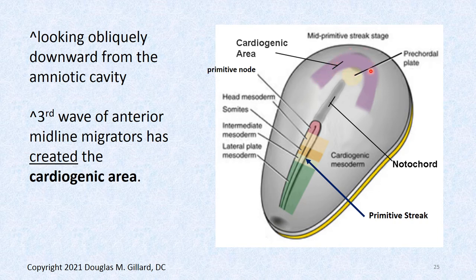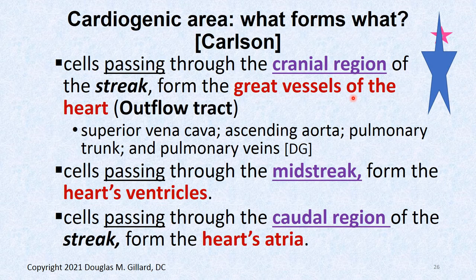The cardiogenic mesoderm morphs into the cardiogenic area and gives rise to the heart and the great vessels that come off the top of the heart. Regarding which part of the primitive streak gives rise to which part of the heart: cells passing through the cranial region of the streak give rise to the great vessels — the superior vena cava, pulmonary trunk, and pulmonary veins. The inferior vena cava is often not described as a great vessel.